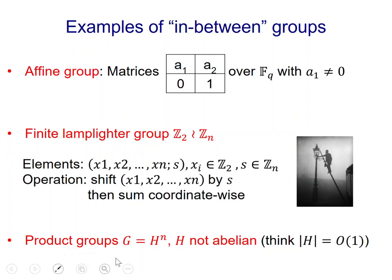The third and final example of in-between groups is that of product groups G of the type H to the N, where H is not abelian. Think, for example, H has constant size. So, again, this is a generalization of the hypercube, which corresponds to H just being Z2.